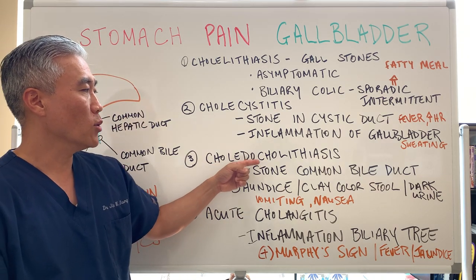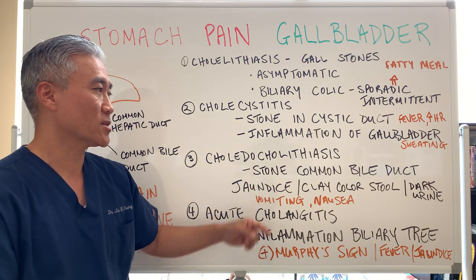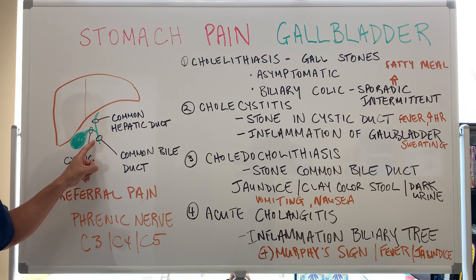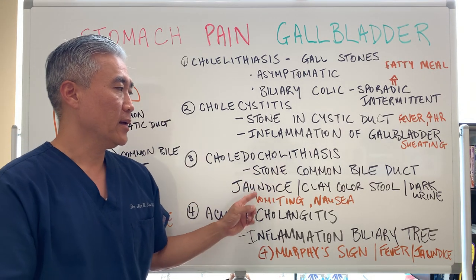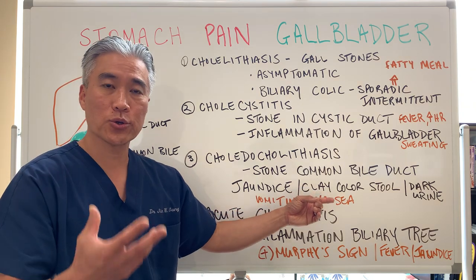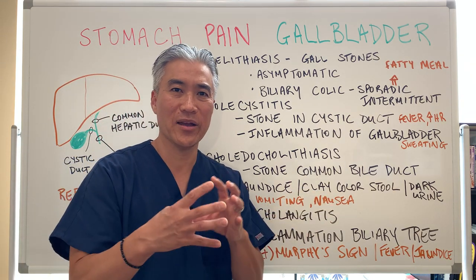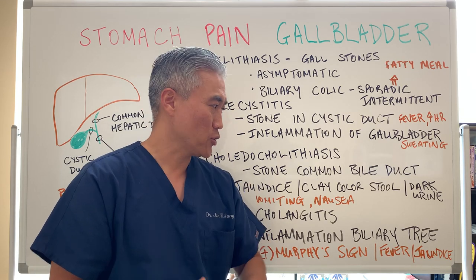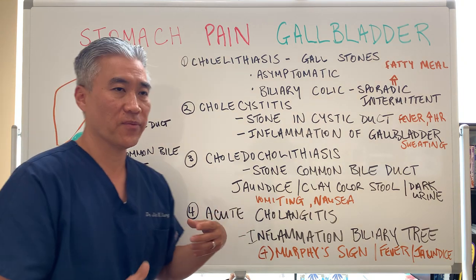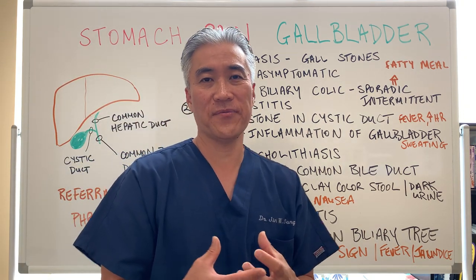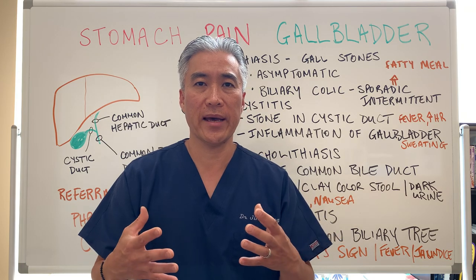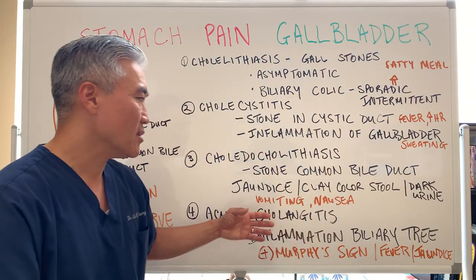The next condition is when a stone is caught in the common bile duct. It gets caught there and causes jaundice because of bile buildup. Your stool color will look clayish or whitish, and you can also have dark urine. Associated symptoms include vomiting and nausea, and the symptomatology is more significant — it can last up to 6 to 7 hours with inflammation, pain, fever, etc.